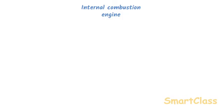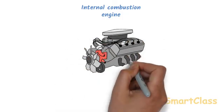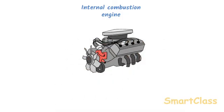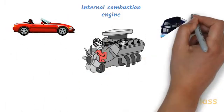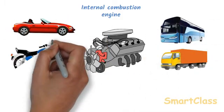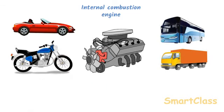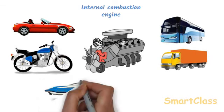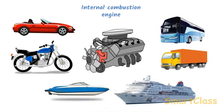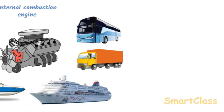The invention of internal combustion engine in second half of 19th century gave us transport vehicles called automobiles such as cars, buses, trucks, motorcycles etc. for travel on land. Motorized boats and ships were developed as means of transport on water such as rivers and seas.